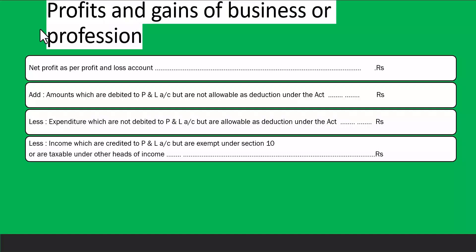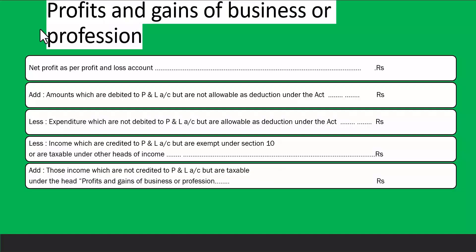You also reduce incomes credited to the P&L account that are exempt under Section 10 or taxable under other heads. For example, agriculture income included in the P&L account needs to be removed, and interest on bank accounts should be reported under other sources, not business income. Finally, you add incomes not credited to the P&L account but taxable under profits and gains of business or profession.